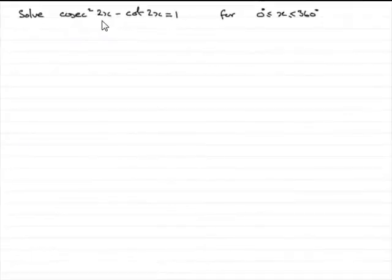Now we're asked to solve cosec squared 2x minus cot 2x equals 1 for x between and including 0 to 360 degrees. So how are we going to do this?